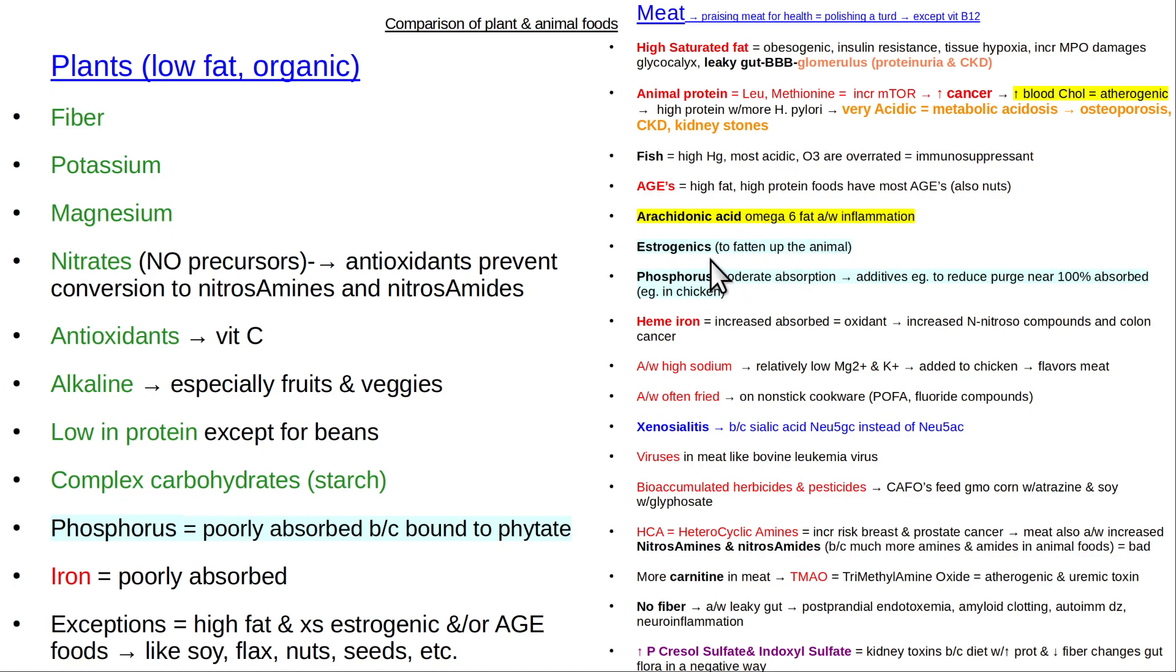Estrogenic chemicals. Estrogens are given to animals, to cattle, to fatten them up more rapidly. So there's more of that in animal foods. There's a moderate amount of phosphorus in animal foods that's more readily absorbed than the phosphorus in plant foods. Phosphorus in plant foods is typically tied up with phytates, and it's poorly absorbed.